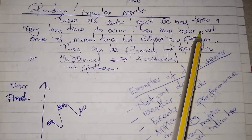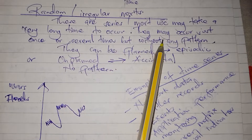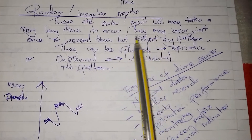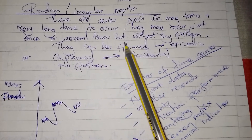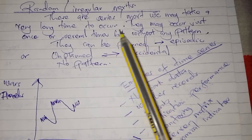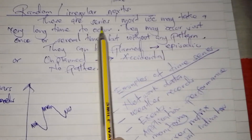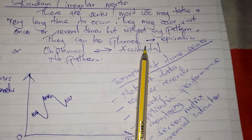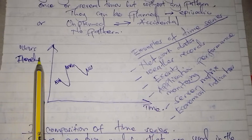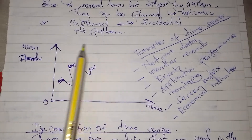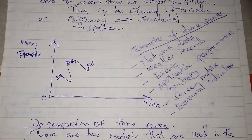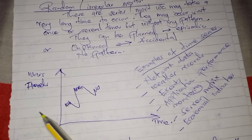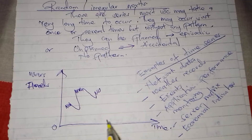The fourth component is random or irregular movements. These are serious movements which take a very long time to occur. They may occur just once or several times but without any pattern. An example is a pandemic, which takes long to occur and may happen once in a lifetime. Random or irregular movements can be planned, also known as episodic, or unplanned, also known as accidental. Examples include wars and floods.